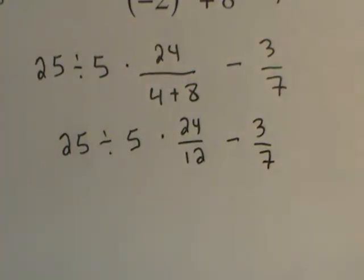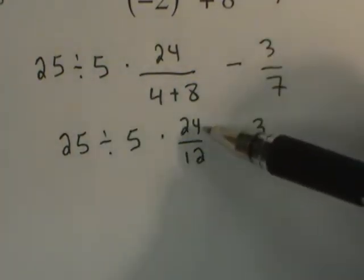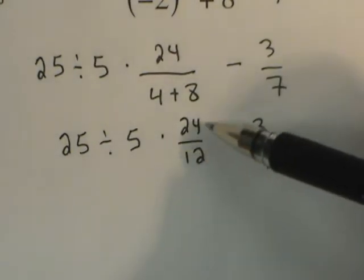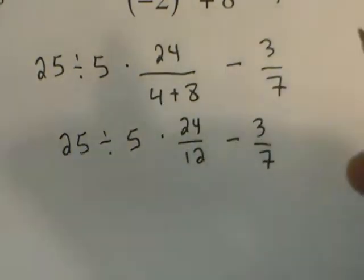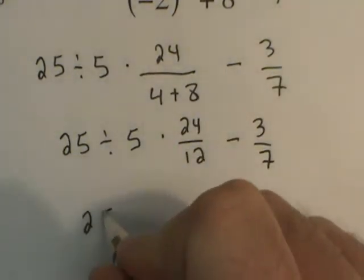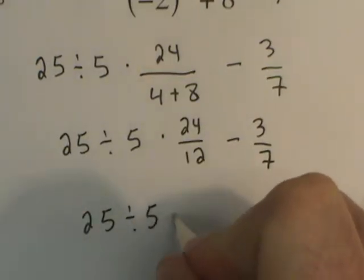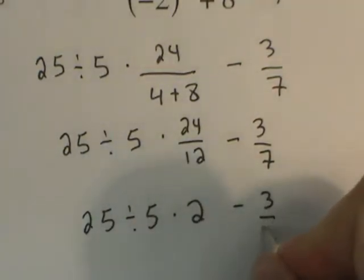Continually look for that opportunity to simplify the problem. So with a fraction of 24 twelfths, most simply that could be written as 2. And so I'll rewrite this as 25 divided by 5 times 2 minus 3 sevenths.